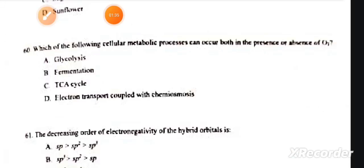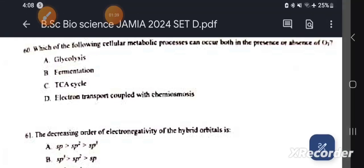Question number 60: Which of the following cellular metabolic processes can occur both in the presence or absence of O2? Correct answer is A.